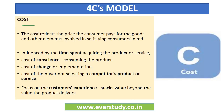The next C is cost. Cost na sirf price include karta hai jo consumers pay karte hain goods khareedne ke liye, but aur bhi elements include karta hai related to satisfying consumers' needs. These elements include: time spent acquiring the product or service; the cost of consuming the product and whether your purpose was solved; cost of change or implementation — the time and effort lagta hai to utilize a new product or service; and the cost related to not selecting a competitor's product, meaning aapka product kitna extra benefit ya value provide karta hai over the competitor's product.